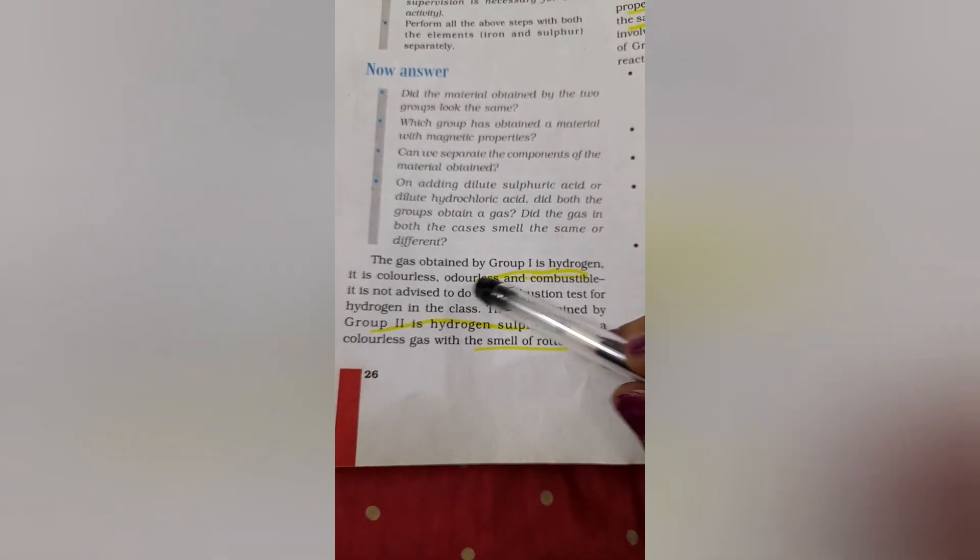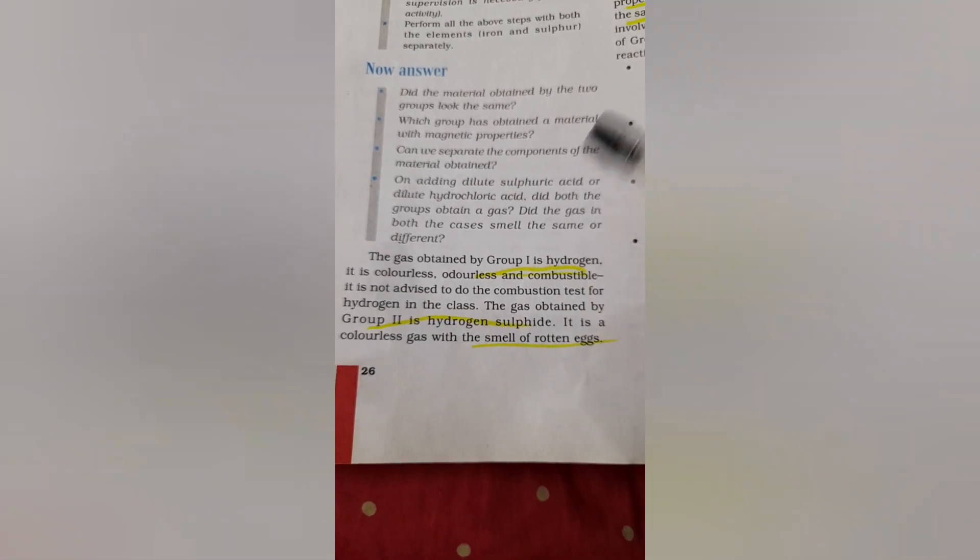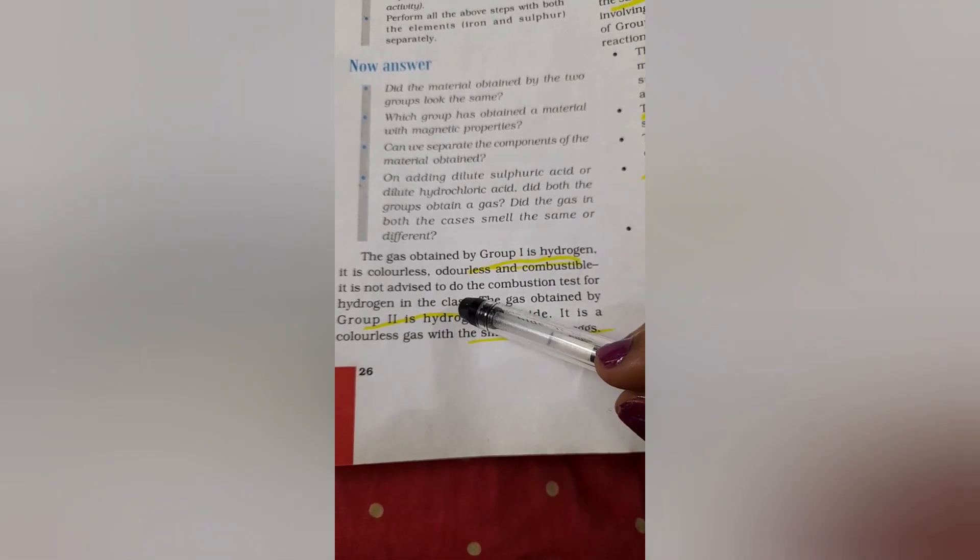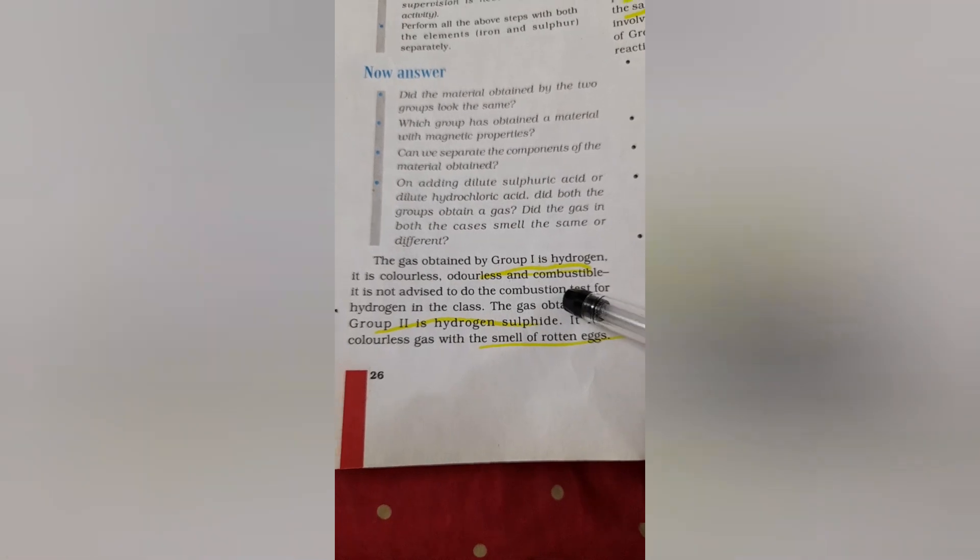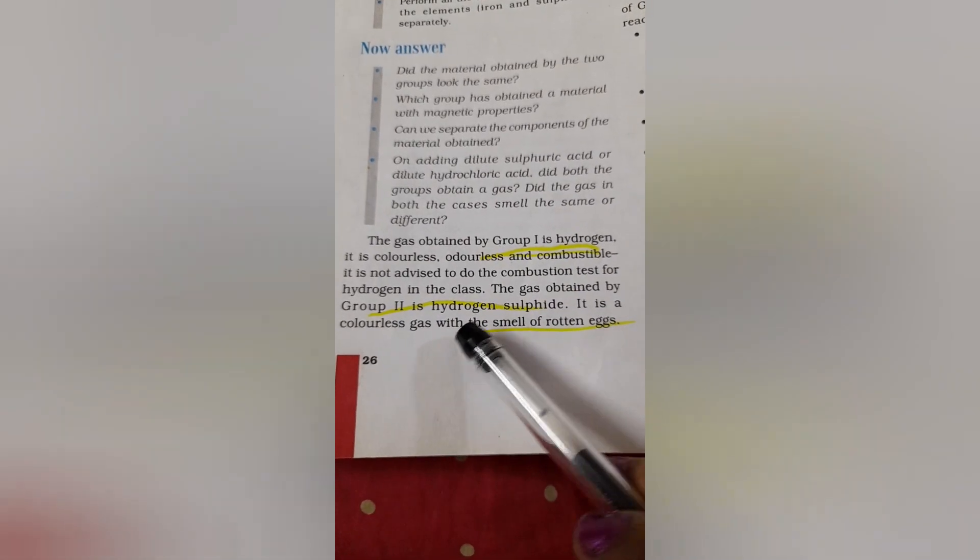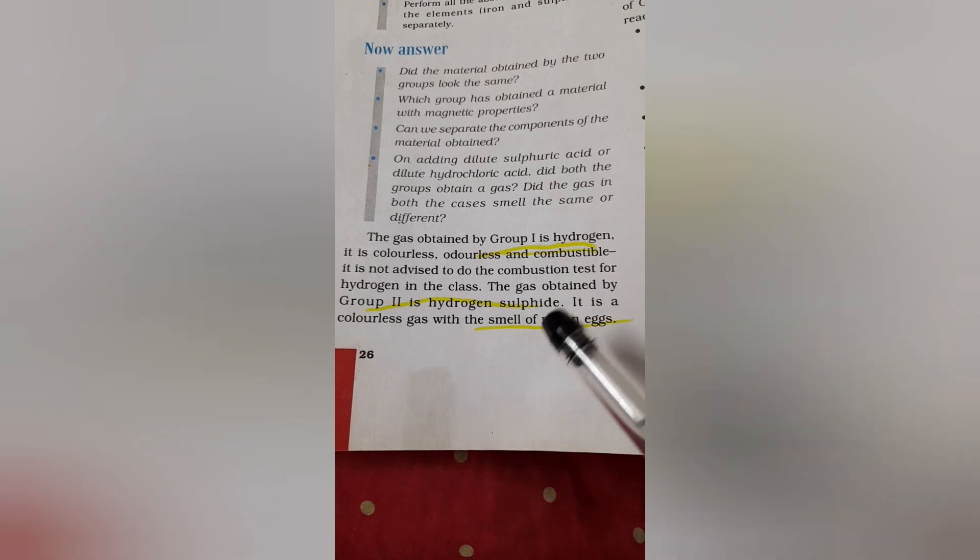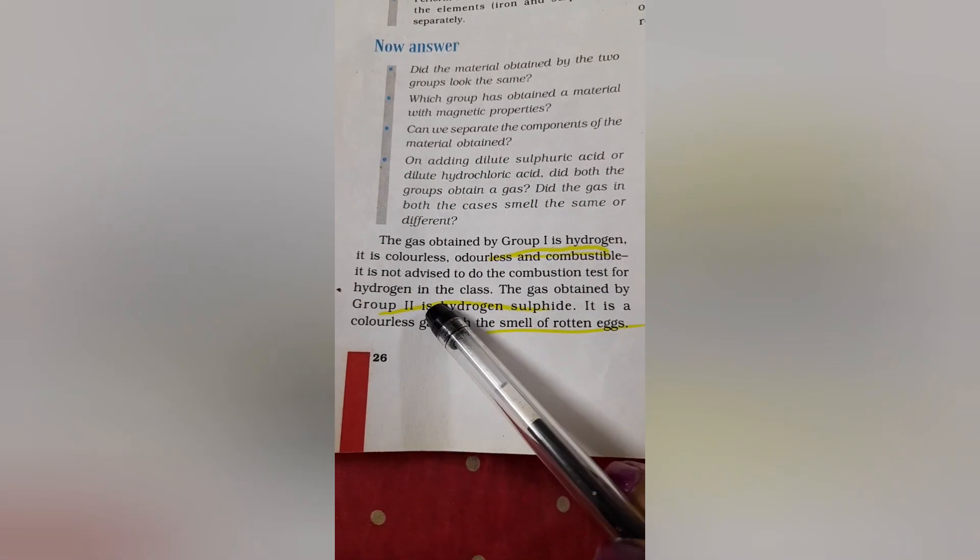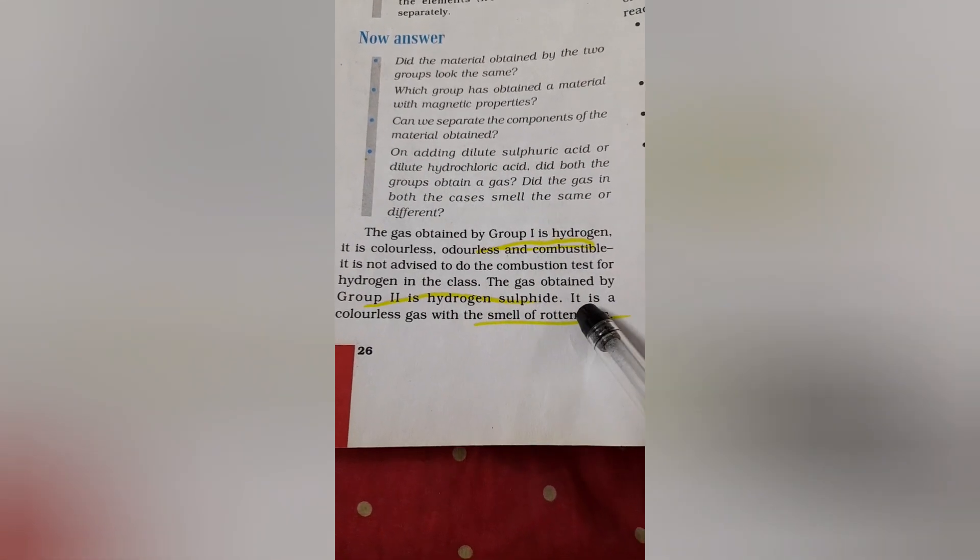In the first group the gas obtained is hydrogen which is colorless, odorless and combustible. Combustible means burning. It is not advised to do the combustion test for hydrogen in the class because the gas obtained is highly risky.